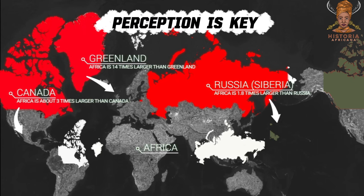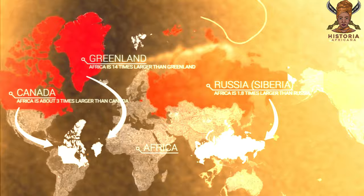For centuries, our perception of the world has been skewed by misleading maps. The most common classroom maps are based on the Mercator Projection, designed in the 16th century.